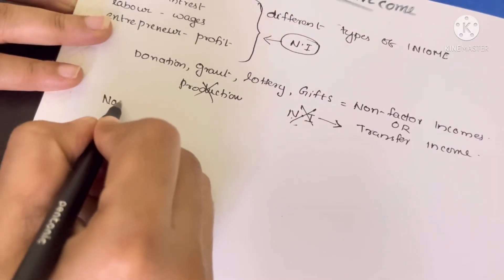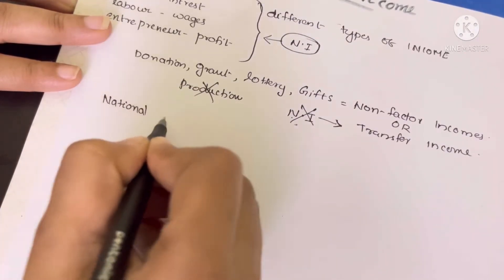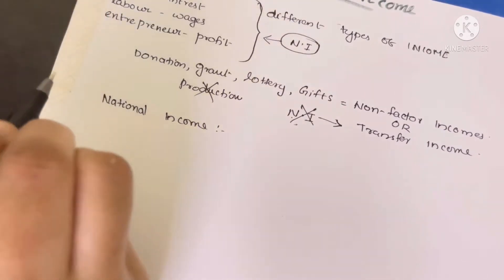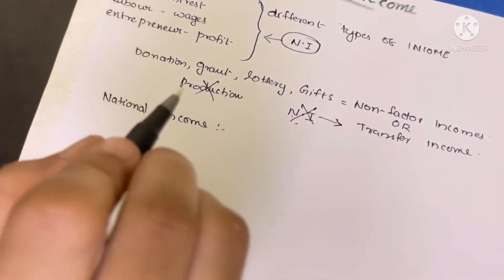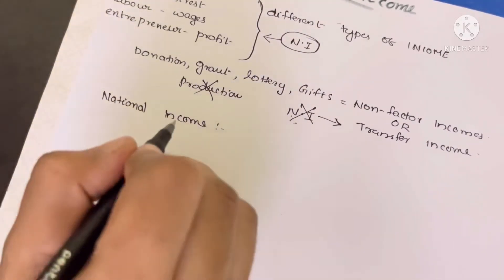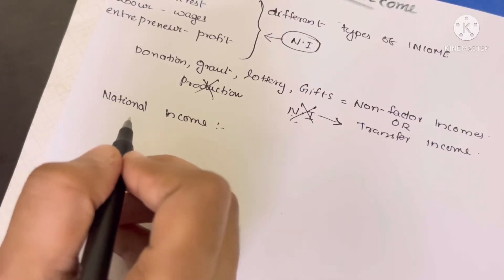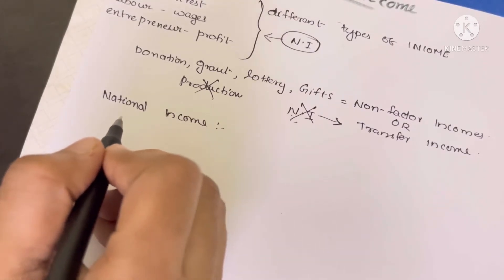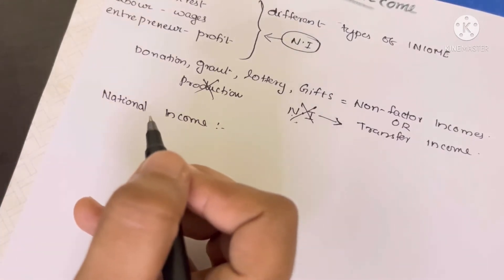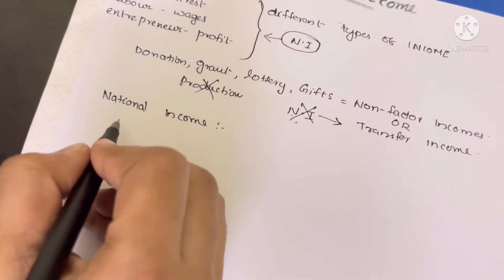What national income is: we don't include any transfer income in it. Transfer income is excluded from national income calculations.